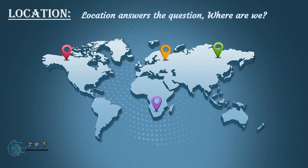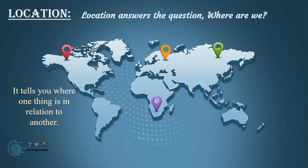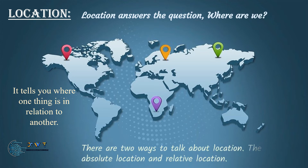Location tells you where one thing is in relation to another. There are two types of location: absolute location and relative location. Absolute location uses latitude or longitude, while relative location tells you where one thing is in relation to something else.